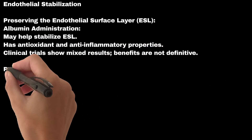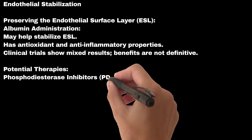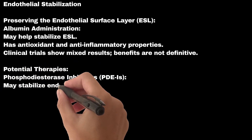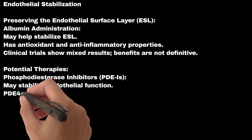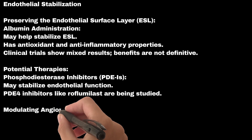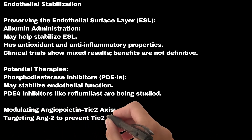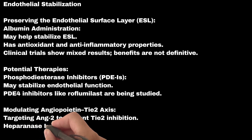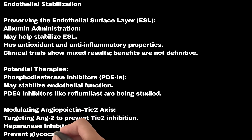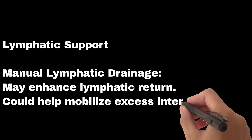Potential therapies include phosphodiesterase inhibitors (PDE-Is), which may stabilize endothelial function — PDE-4 inhibitors like roflumilast are being studied. Experimental approaches include modulating the angiopoietin-TIE2 axis by targeting ANG2 to prevent TIE2 inhibition, heparanase inhibitors to prevent glycocalyx degradation, and lymphatic support through manual lymphatic drainage, which may enhance lymphatic return and help mobilize excess interstitial fluid.